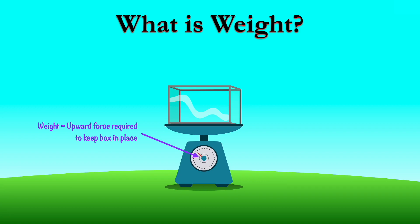It's measuring the force that the scale has to impart upwards on the box in order to keep the box in the same place. And that weight we can write as mg, where m is the mass of the box and g is the local acceleration due to gravity.